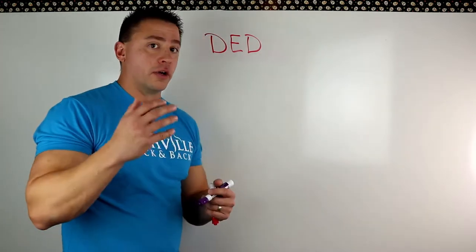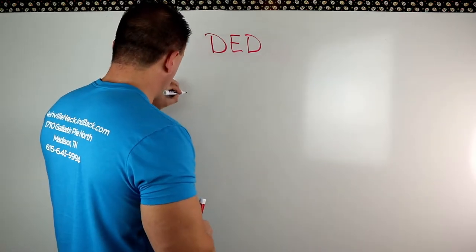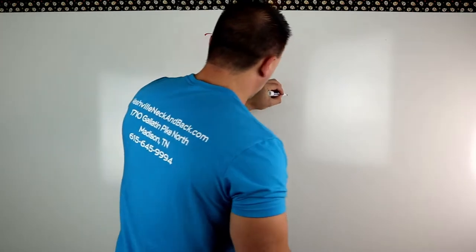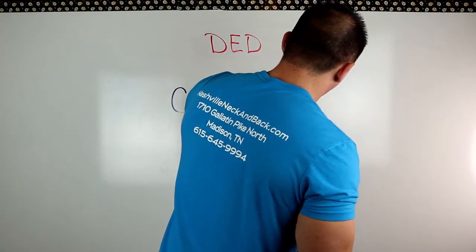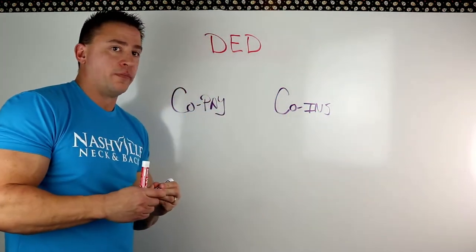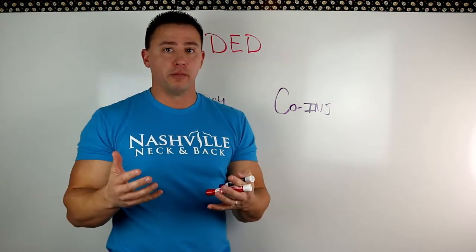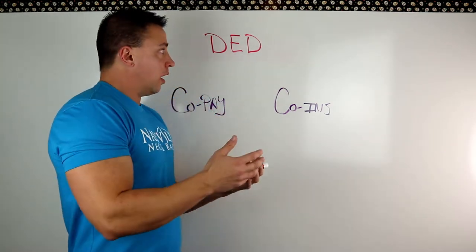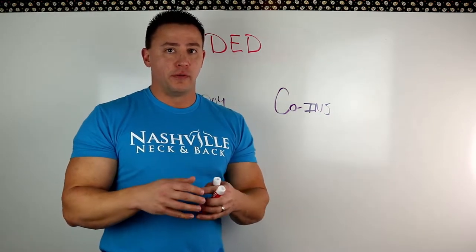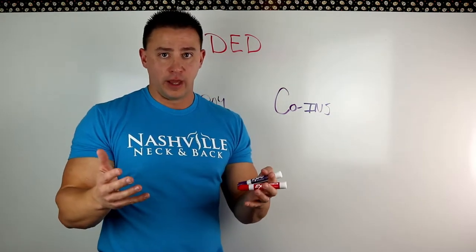And those are your co-pay or co-insurance. So let's write that up here on the board. Co-pay and co-insurance. So here's what we're going to talk about. So if you've met your deductible, first of all, let's talk about if you haven't met your deductible. So if you've not met your deductible, you're going to pay each time you go into an office the full allowable amount for that day for that service.